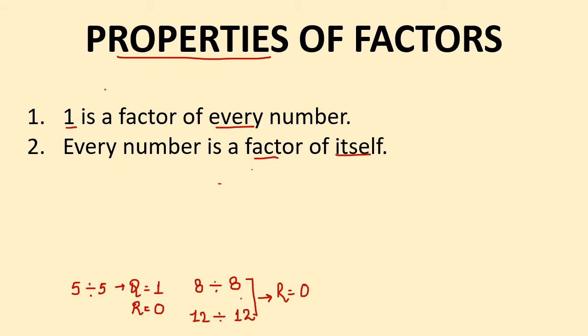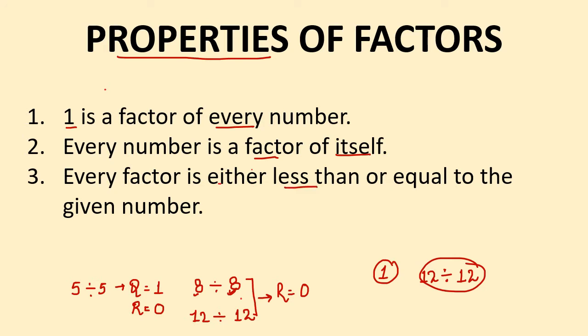Each and every number can divide itself completely. The smallest factor of any number is 1 and the greatest is that number itself, because a divisor cannot be greater than the dividend. So if we have to divide 12, the greatest divisor can be 12 only. Therefore, every factor is either less than or equal to the given number.